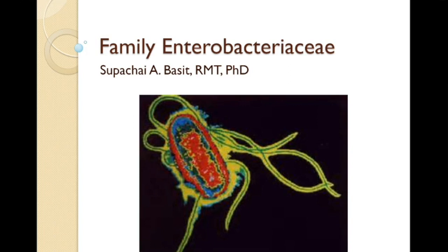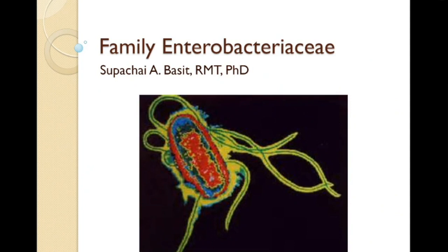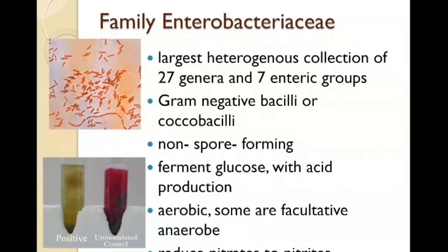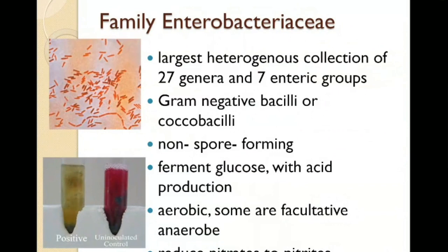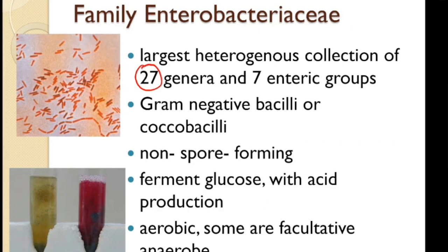Good afternoon. For today, we shall be discussing the family Enterobacteriaceae. This family is considered to be the largest heterogeneous collection of 27 genera. There are actually 7 enteric groups, sometimes called tribes. They are classified as gram-negative bacilli, or sometimes coccobacilli — when we say coccobacilli, we are referring to plump bacilli.